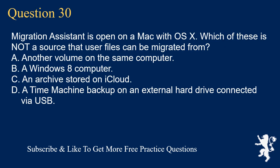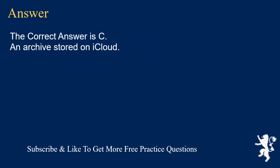Question 30. Migration Assistant is open on a Mac with OSX. Which of these is not a source that user files can be migrated from? A. Another volume on the same computer. B. A Windows 8 computer. C. An archive stored on iCloud. D. A Time Machine backup on an external hard drive connected via USB. The correct answer is C: An archive stored on iCloud.